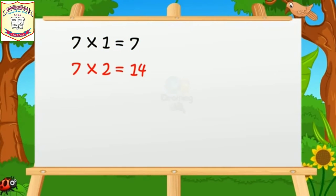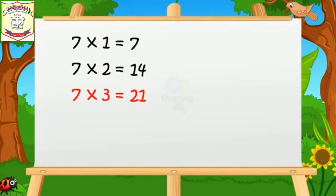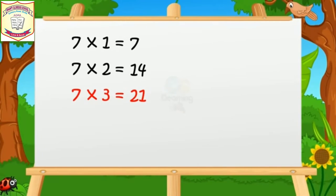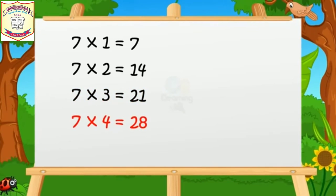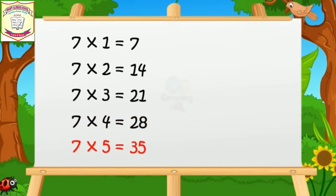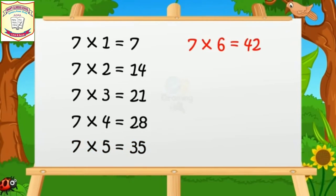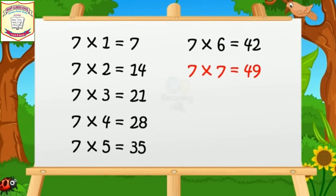Seven threes are twenty-one. Seven fours are twenty-eight. Seven fives are thirty-five. Seven sixes are forty-two. Seven sevens are forty-nine.